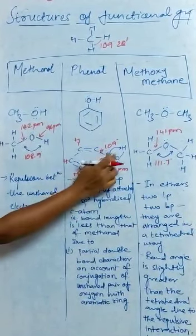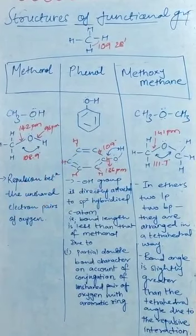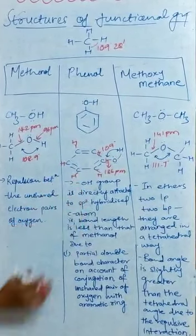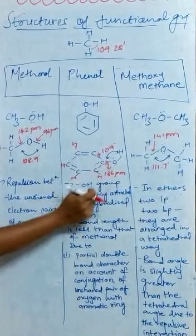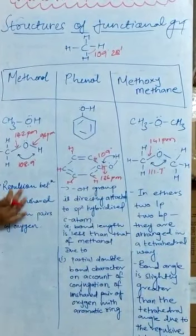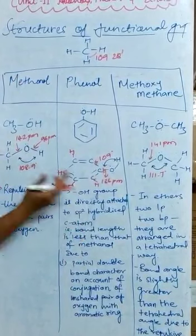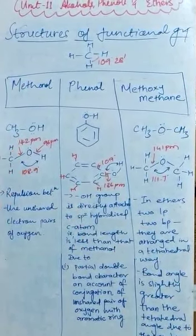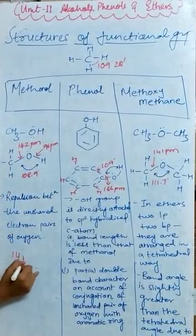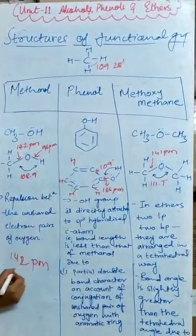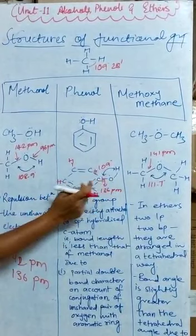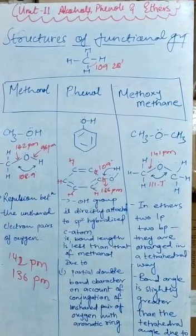For phenol, this bond length is 136 picometers. What is the reason? The OH group is directly attached to an SP2 hybridized carbon atom, so the bond length is less than that of methanol. Looking at carbon and oxygen in methanol, the bond length is 142 picometers, whereas in phenol it is 136 picometers — so it is a little bit less.